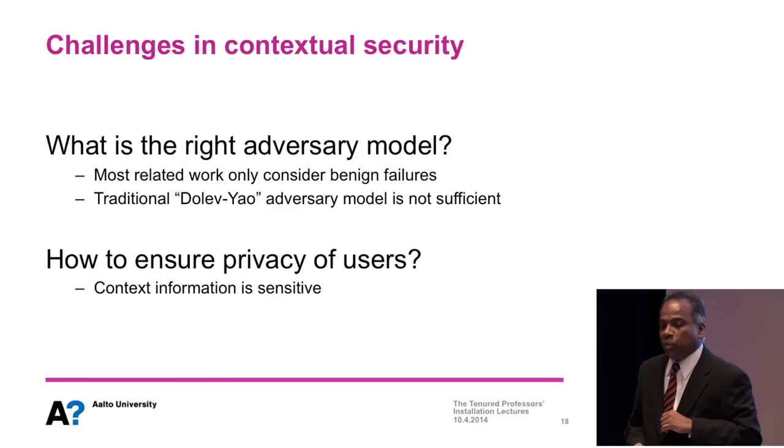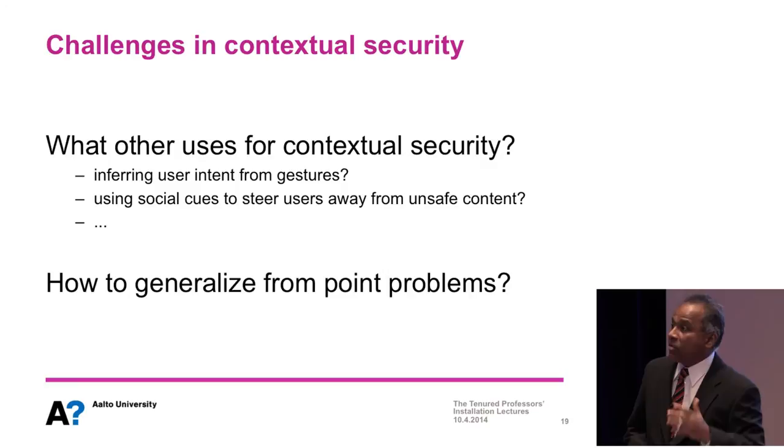For example, if someone designs a face recognition system, they argue it's performing well if it won't mistake my face for someone else's — but that's a benign failure. An attacker is not going to use their own face to break the system; they might use a mask or some other technique. There is no limit to the ingenuity of the attacker. The right way to characterize an attacker is to design a model that is both rigorous and realistic — and this is really an open question. The Dolev-Yao model simply falls short here.